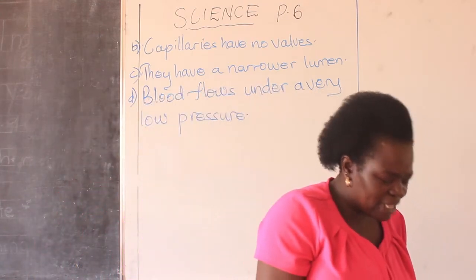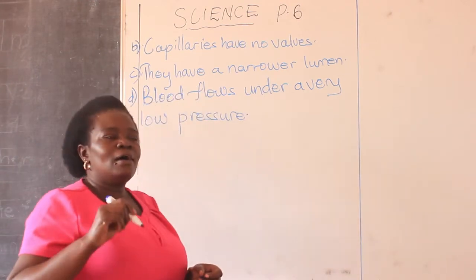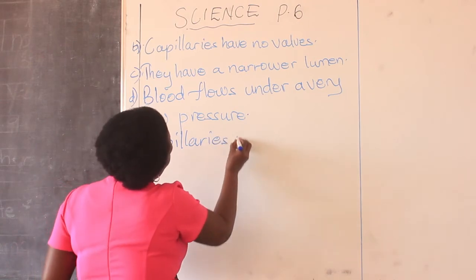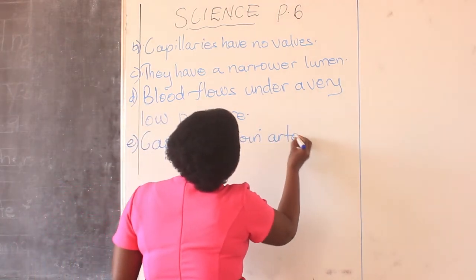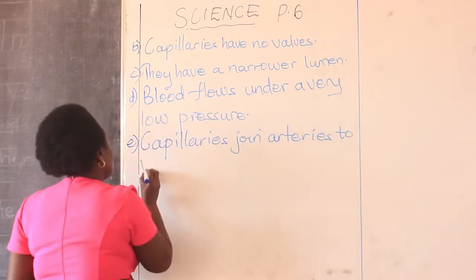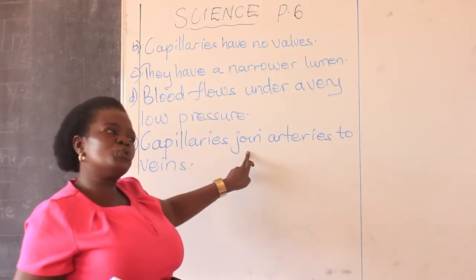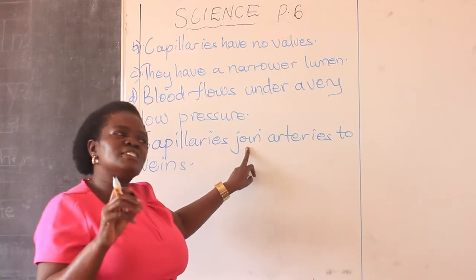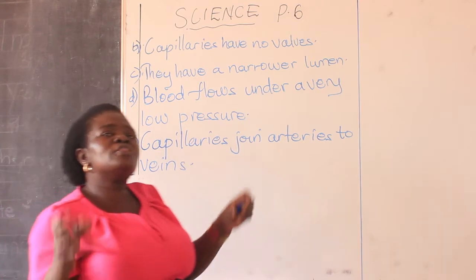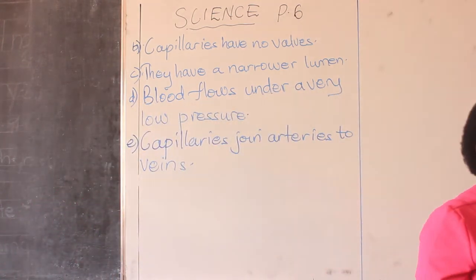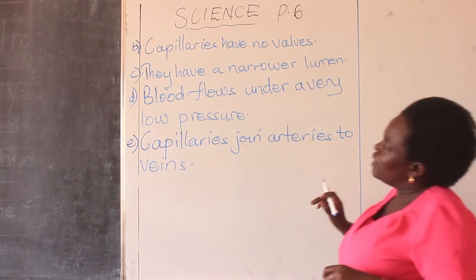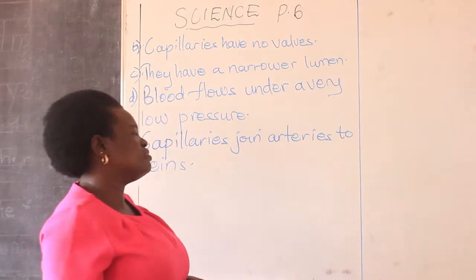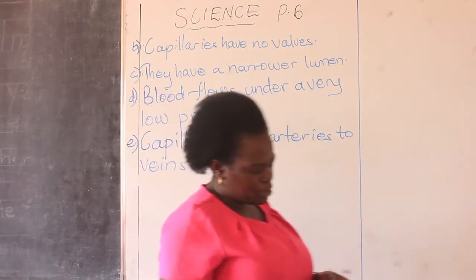The last characteristic is that capillaries join arteries to veins. This is also one of the functions of capillaries. If asked the function or importance of blood capillaries, number one is that capillaries join — or link, or connect — arteries to veins. The other function is that they help in the exchange of body materials, all of which are exchanged between the capillaries.